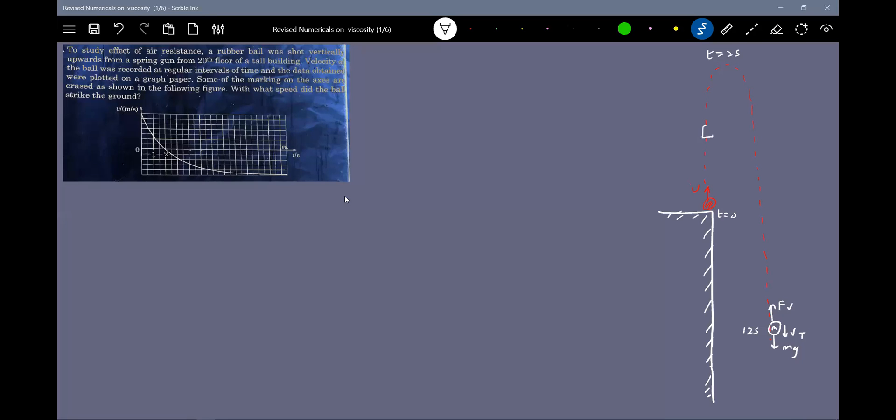When it is ascending, what forces will act? It will have velocity V, the viscous drag, and mg. When it is descending, mg acts downward and viscous drag will be upward. It will have some velocity V1 and V2, but the viscous drag should act opposite to direction of motion.